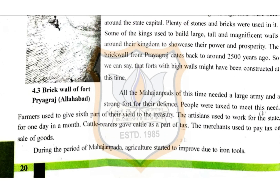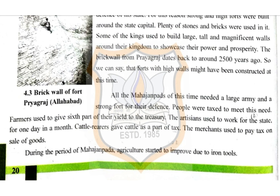All the Mahajanapadas of this time needed a large army and a strong fort for their defense. People were taxed to meet these needs. Farmers used to give one-sixth part of their yield to the treasury. Artisans used to work for the state for one day in a month. Cattle rearers gave cattle as part of their tax, and merchants paid tax on the sale of goods.